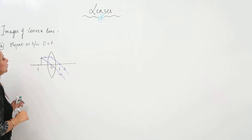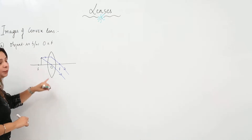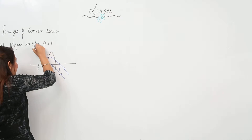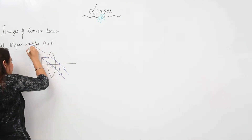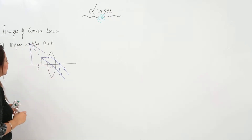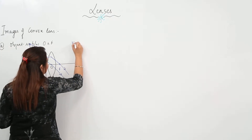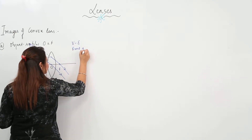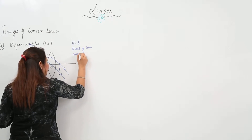We will see that when this occurs, the rays are not actually meeting. But when we produce them behind the lens, we see that they meet, and this is the image formed. So the image formed is virtual, erect, in front of the lens, and magnified.